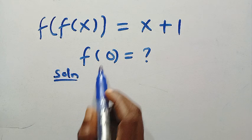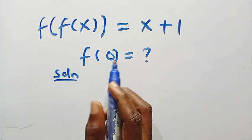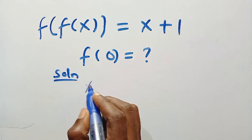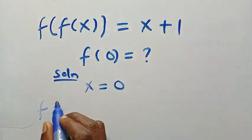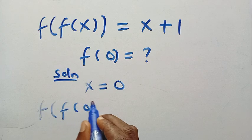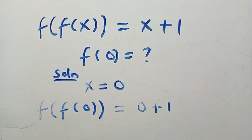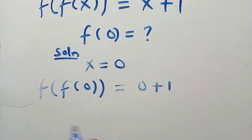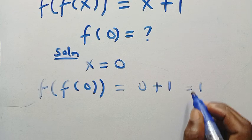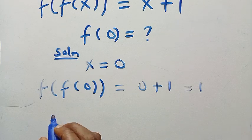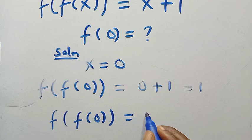The first thing we are going to test is replacing x with zero. So let x equal zero. By doing that, we have f of f of zero equals zero plus one, which equals one. So therefore we have f of f of zero equals one.